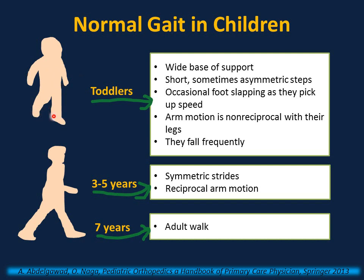Toddlers also have non-reciprocal arm motion with their legs and fall frequently. Between three and five years of age, they have symmetric strides, reciprocal arm motion, and overall improvement in motor development. By seven years and above, they have an adult walk.